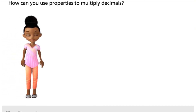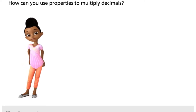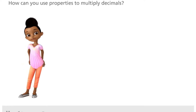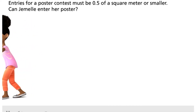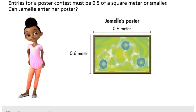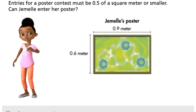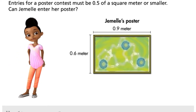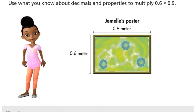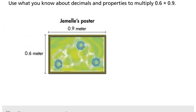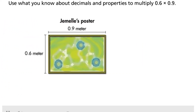How can you use properties to multiply decimals? Entries for a poster contest must be 5 tenths of a square meter or smaller. Can Jamel enter her poster? Use what you know about decimals and properties to multiply 6 tenths times 9 tenths.